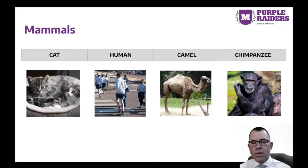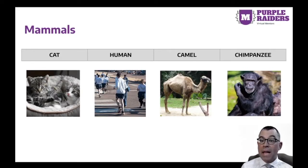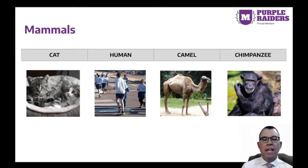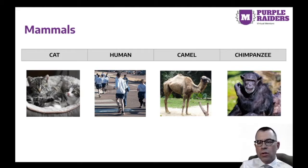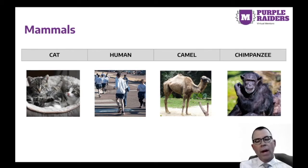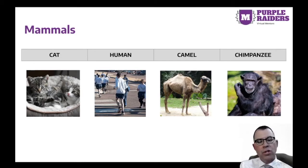Mammals are another group of animals with backbones. Mammals have hair or fur. They give birth to live young and feed them milk. They are among the most intelligent of all living things. Mammals include a wide variety of animals, from cats to humans to camels to chimpanzees.